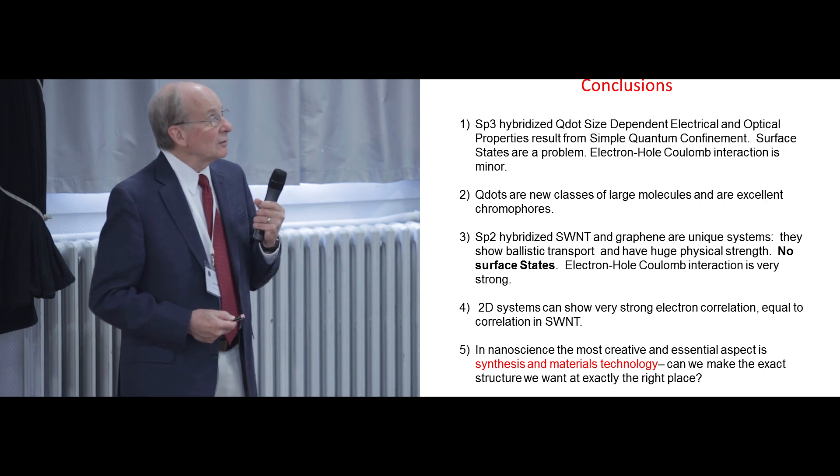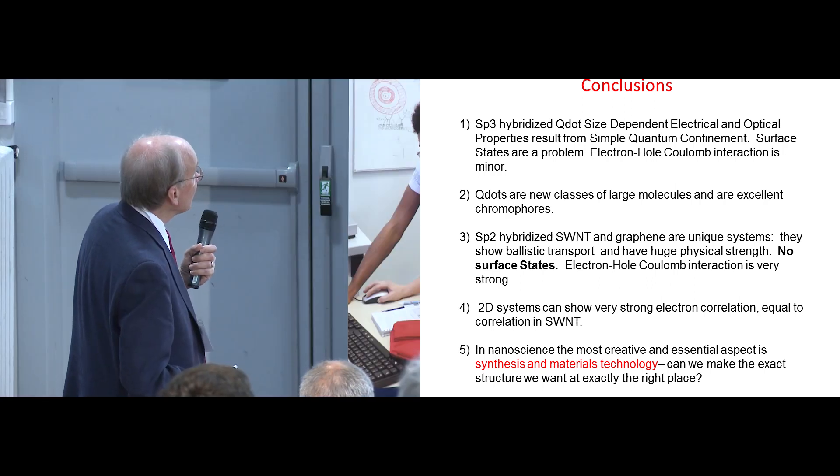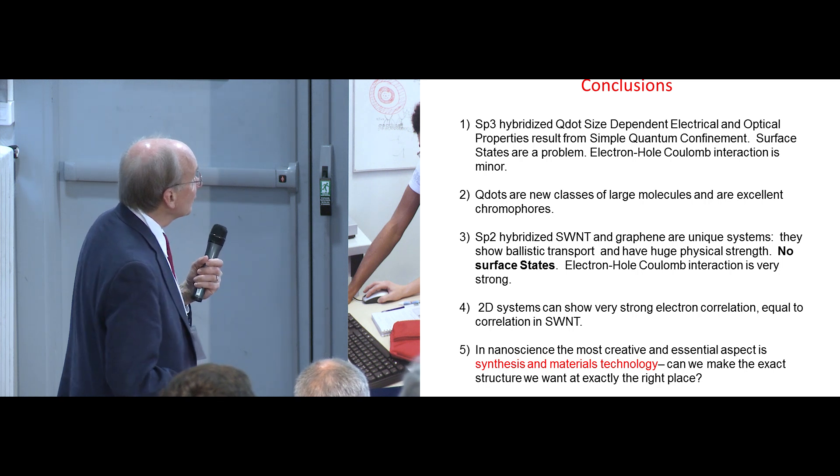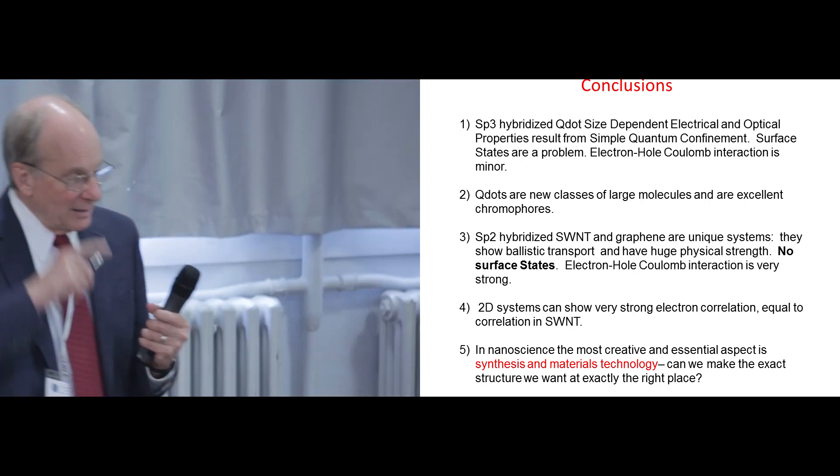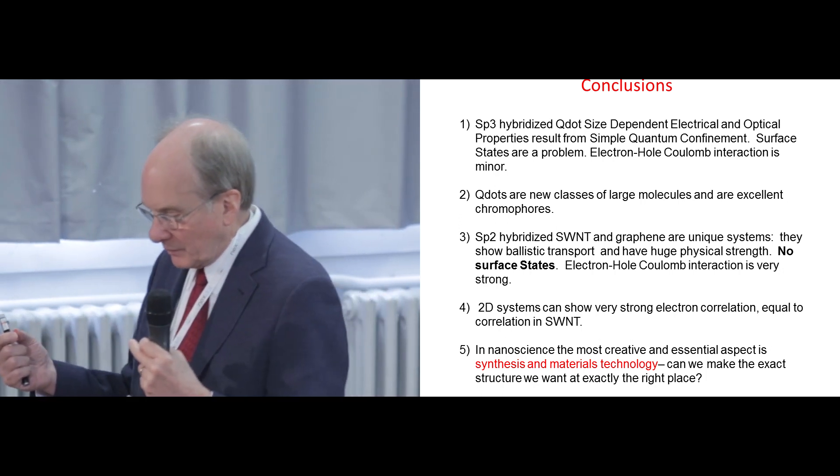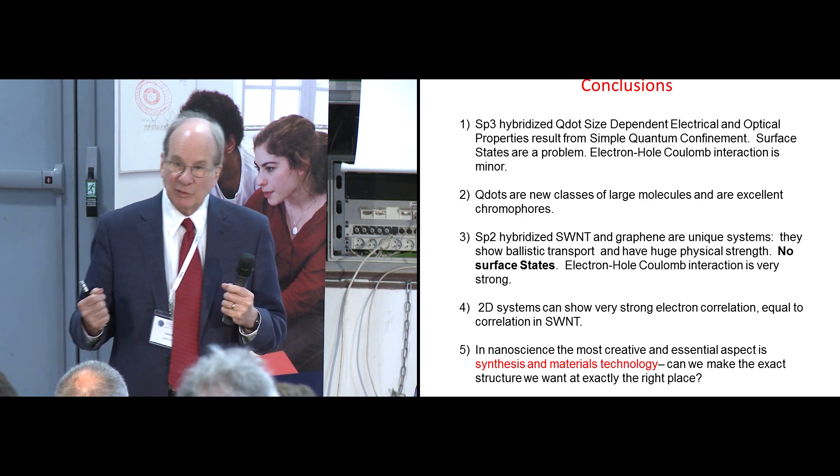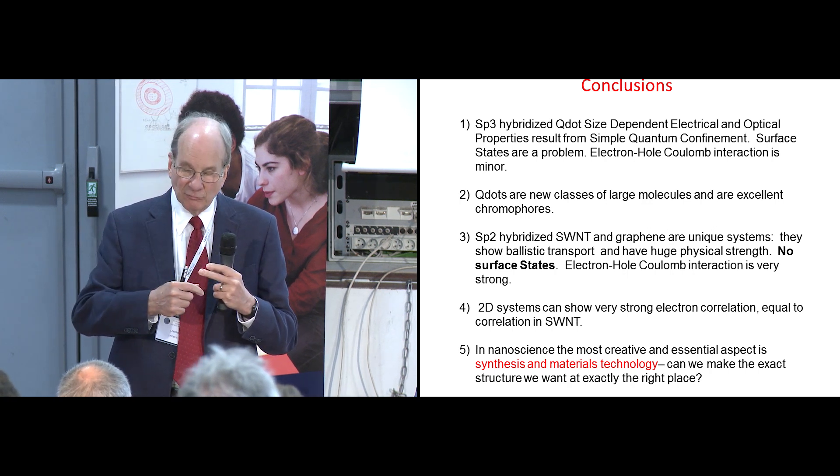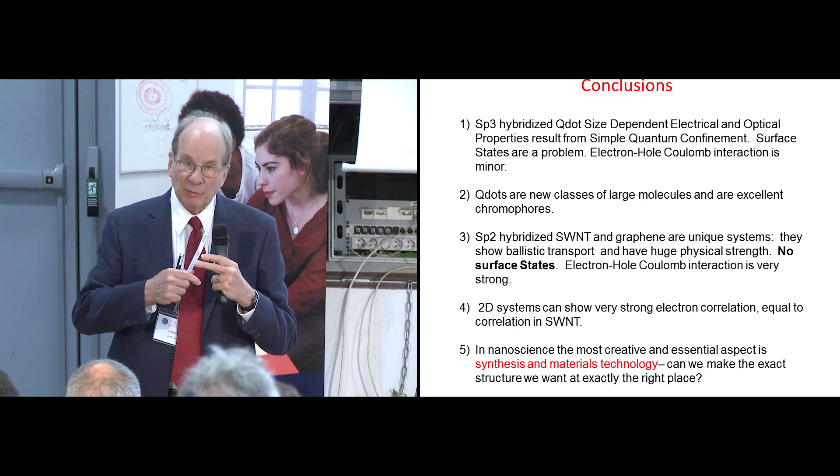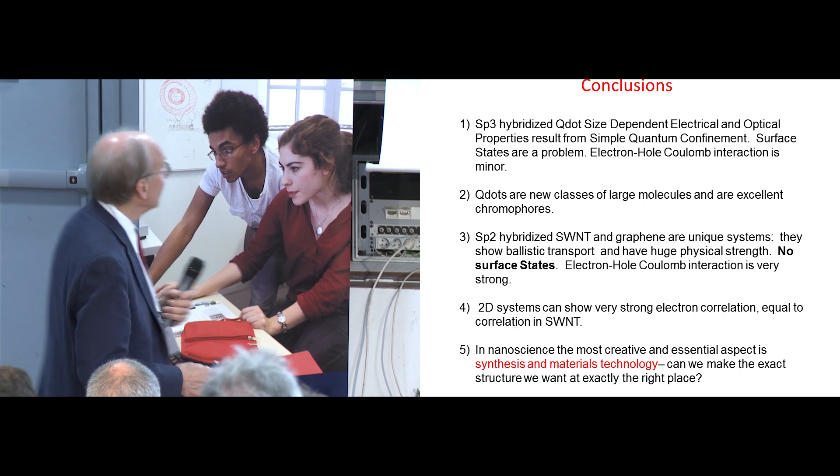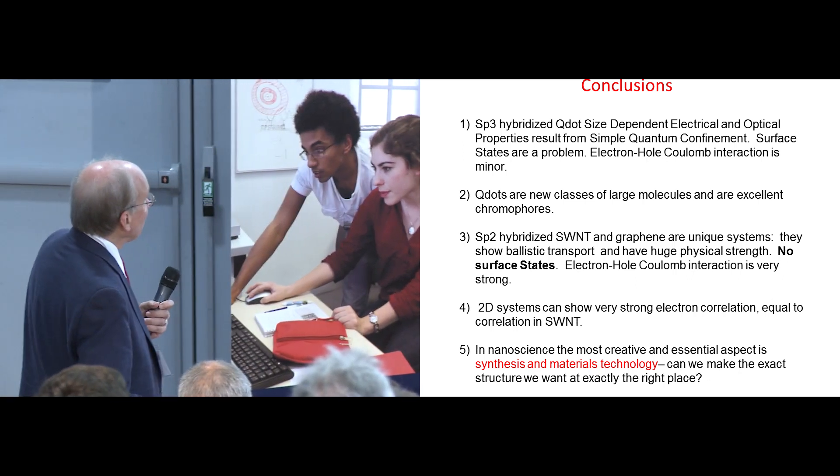These graphene systems are SP2 and unique in many ways. Ballistic transport, huge physical strength. Graphene and diamond have the highest bonding energy of any system in all of nature, basically. Highest atomization energy. So that makes them really strong. And many of their special useful properties come from this huge physical strength.